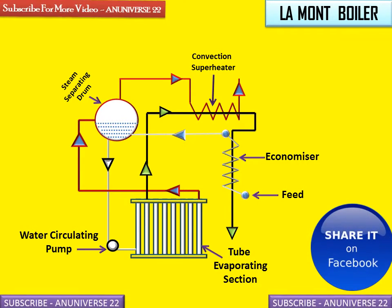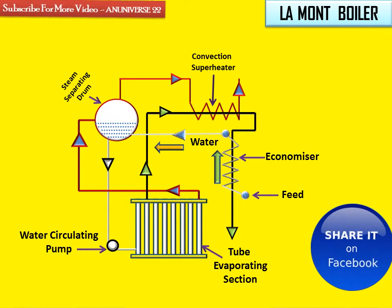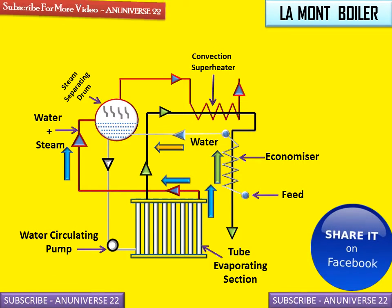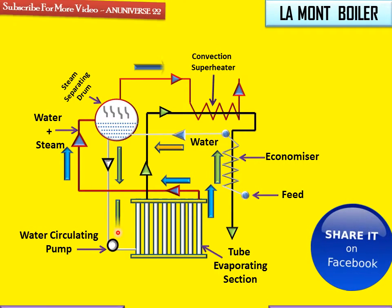A feed pump forces the water into the economizer, where the temperature of the water increases by getting heat from the flue gases. This water is then forced into the evaporator tube by the circulating pump. The water coming out from the steam separator is recirculated through the evaporator tube with the help of the centrifugal pump, producing a mixture of water plus steam that is sent back to the steam separator.